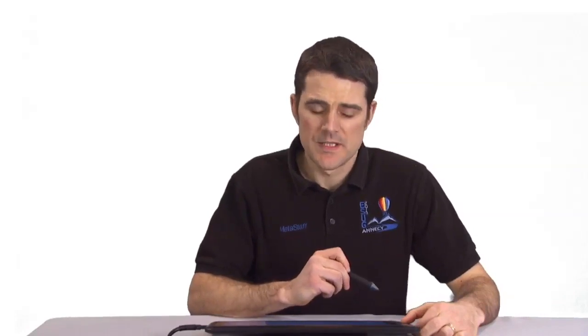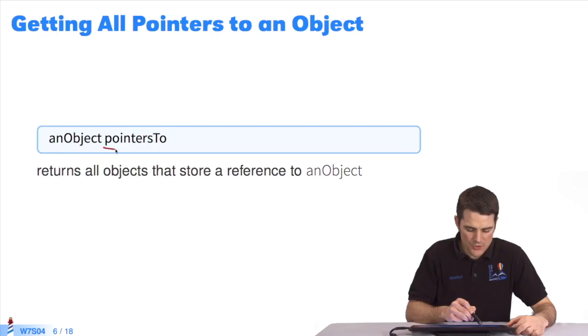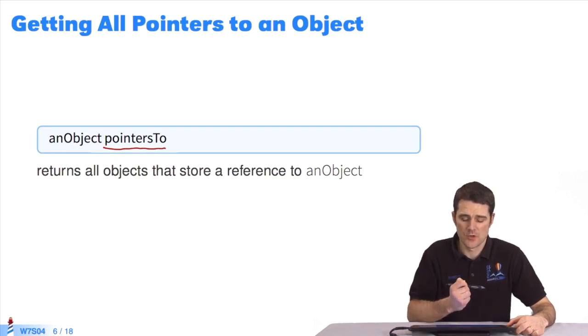Another reflective primitive is pointersTo. If we send this message to an object, we access the collection of all objects that store a reference to the object. This is very useful when we want to swap objects.